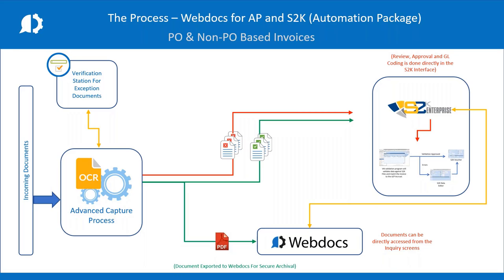I'm going to start by talking about the process and the flow of documents and data in the automation package. Documents inside this process are going to be coming from email accounts, network folders, scanned documents, or EDI transactions. The advanced capture system is going to take that information and process it through the engine to extract all the data and do classification of those documents.